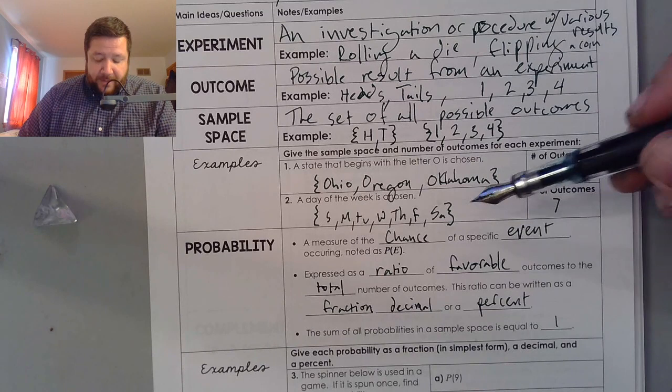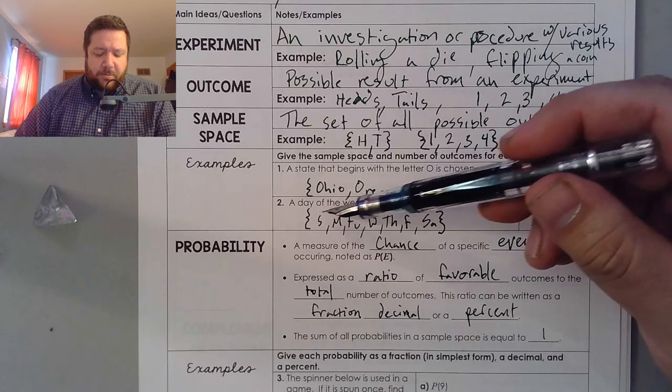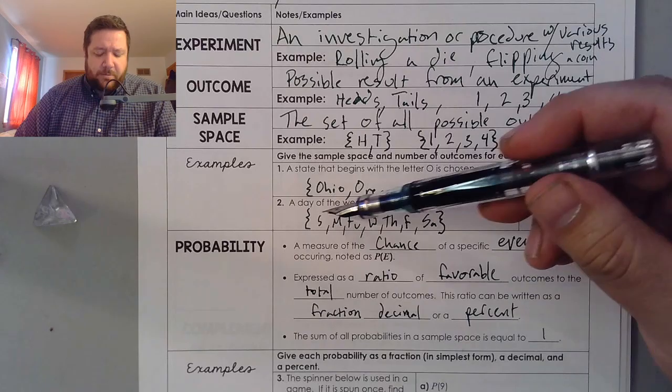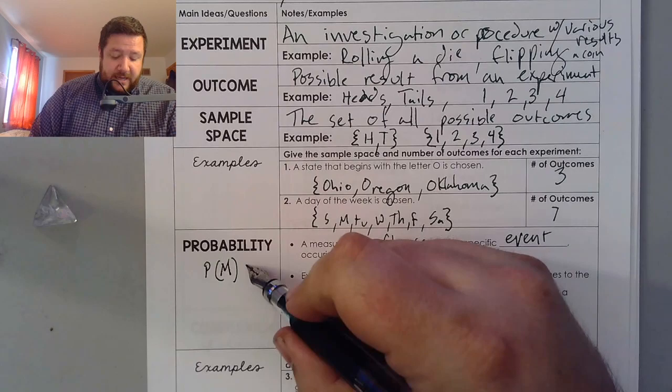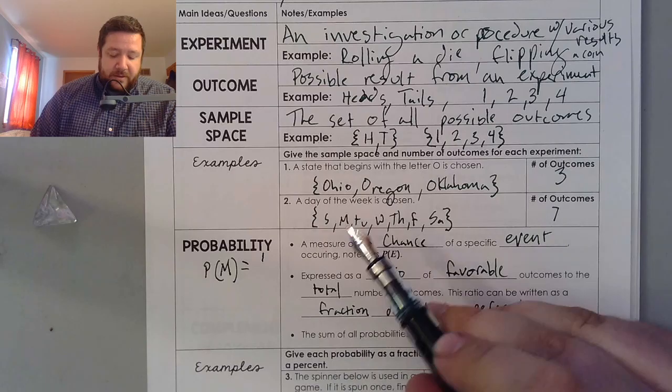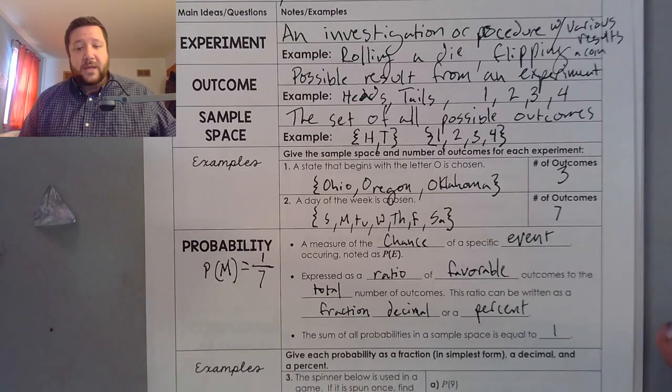And the sum of all probabilities in the sample space always is going to add together to one. So let's go ahead and jump up here. The probability of Monday is going to equal one, which is our desired outcome, being born on a Monday, out of total, which is seven. And if we were to add up the probabilities of each of the days of the week, that would be one-seventh plus one-seventh plus one-seventh and so on until we add all of those fractions up to one.